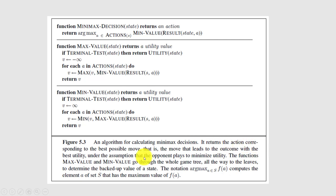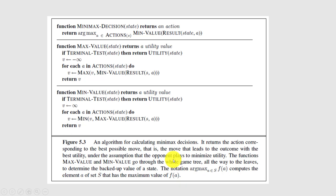The algorithm returns the action corresponding to the best possible move — the move that leads to the outcome with the best utility, under the assumption that the opponent plays to minimize utility. The max_value and min_value functions traverse the whole game tree, and we apply the tree decisions accordingly.